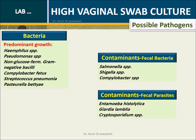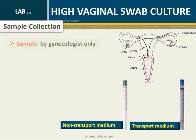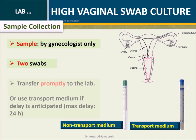Sample collection must be performed by a gynecologist only, using two swabs. Transfer the sample promptly to the lab, or use a transport medium if a delay is anticipated. Maximum delay is 24 hours, or according to instructions.